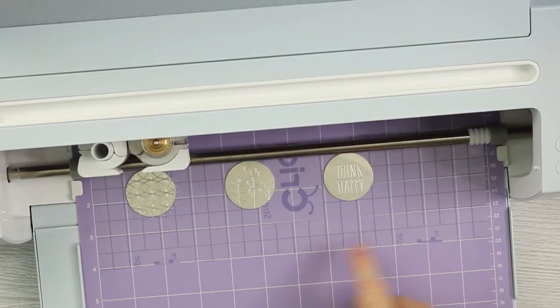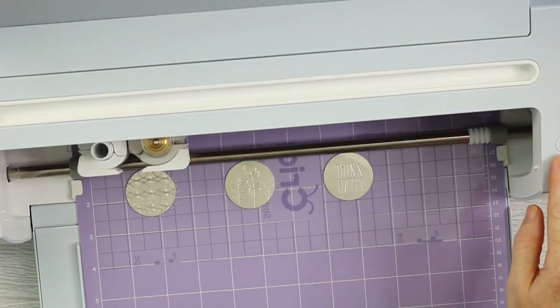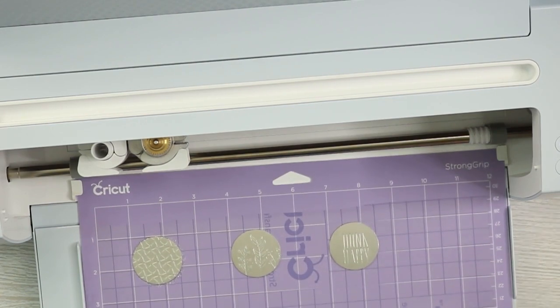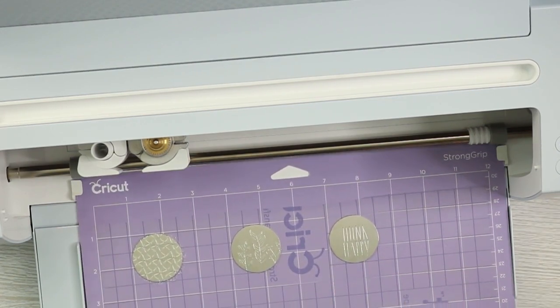And then once your engraving is done, you're just going to click the button to remove the mat from the machine. And now let's take a look at finishing these ring dishes.